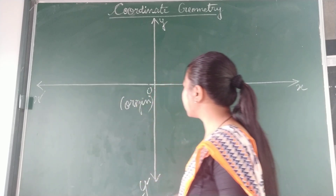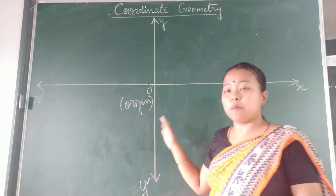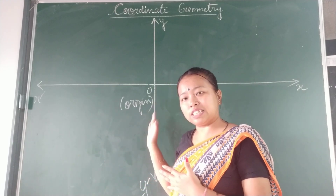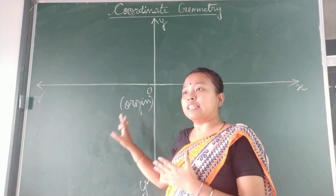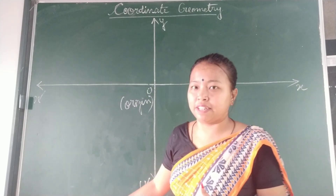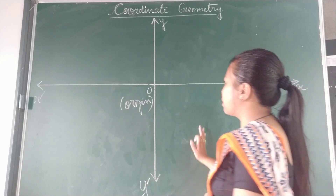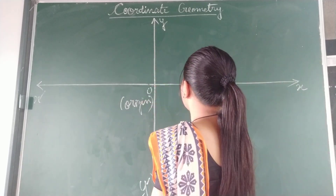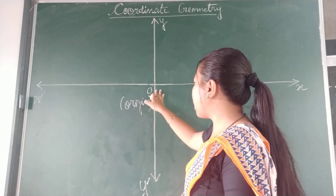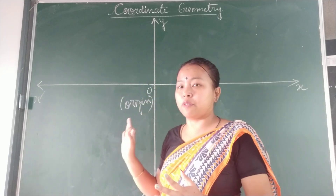The plane where I have drawn the vertical line and the horizontal line — this plane will be known as the Cartesian plane or coordinate plane. When these two lines intersect each other at one point, it makes four quadrants.